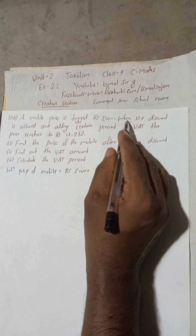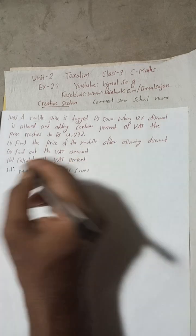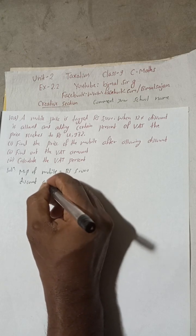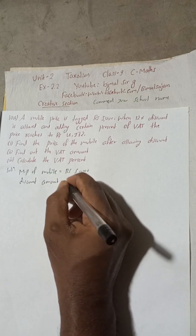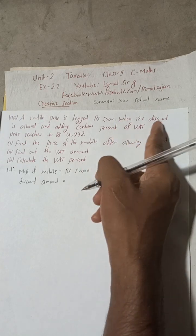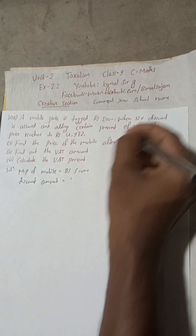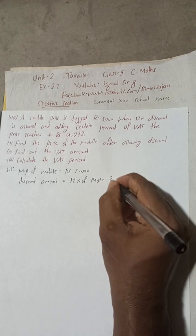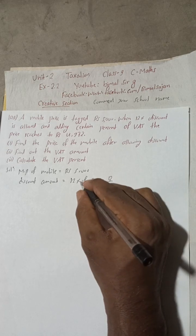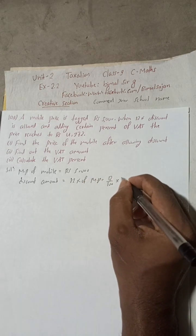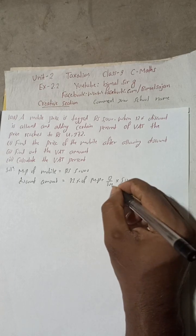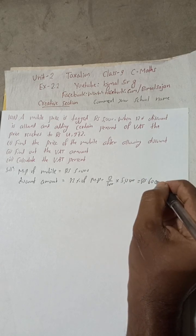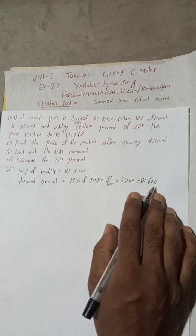And discount is here given 12%. So discount amount is equal to discount percent of the MP. So discount means 12%, so 12% of marked price. So 12 divided 100, percent means divided 100, of means into marked price 5000. So 2-0 cancel, 12-5-60 and 1-0. So discount amount will be Rs 600.